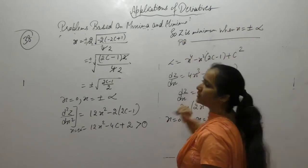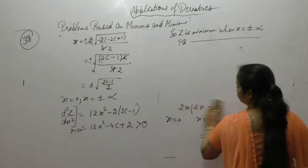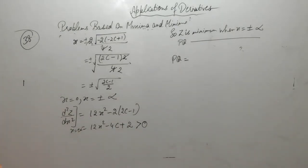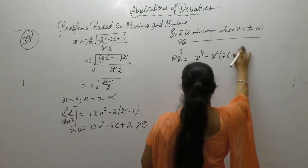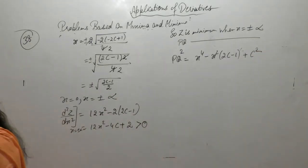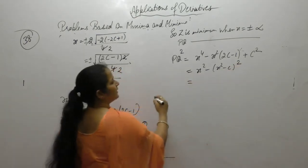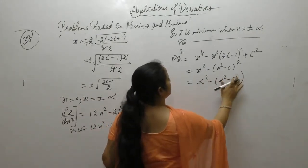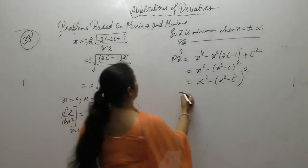So z is minimum when x equals plus minus alpha. Therefore PQ is minimum when x equals plus minus alpha. The value of PQ: PQ squared equals x⁴ minus x² times (2c minus 1) plus c squared. Put the value of alpha, with x equals plus minus alpha, and the whole square will be positive.